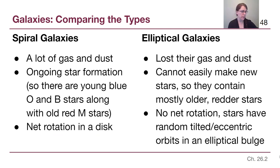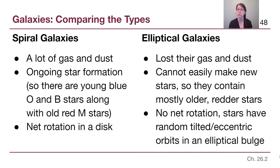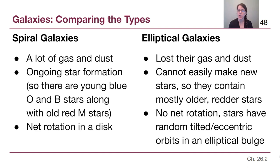It's more useful to be able to look at a galaxy and recognize whether we're seeing gas and dust or not. If we see the effects of ongoing star formation — very young blue stars or emission nebulae forming around young O and B stars — that suggests a spiral galaxy with a disk structure. Elliptical galaxies don't have net rotation; they just have a big blob of stars all orbiting the center.